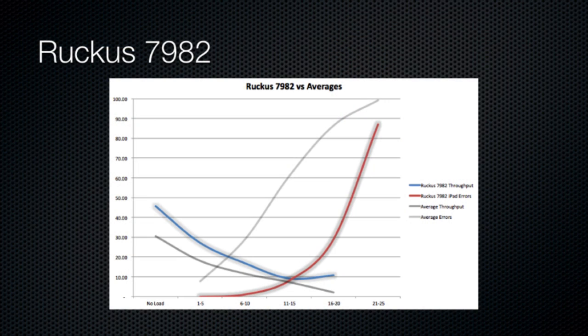The Ruckus 792 was our overall winner with great video and above average on the data throughput.